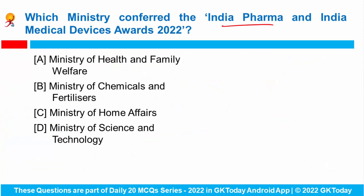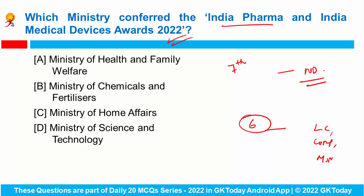Which ministry conferred the India Pharma and Indian Medical Devices Award 2022? The seventh edition of the International Conference on Pharma and Medical Devices Sector 2022 was recently held in New Delhi. The Minister of State of Chemicals and Fertilizers Ministry conferred the India Pharma and India Medical Devices Award 2022 on this occasion. The Department of Pharmaceuticals announced six main categories of awards: Leaders category, Company of the Year, MSME of the Year, Startups of the Year, Innovation category, and CSR category. The correct answer is the Ministry of Chemicals and Fertilizers.